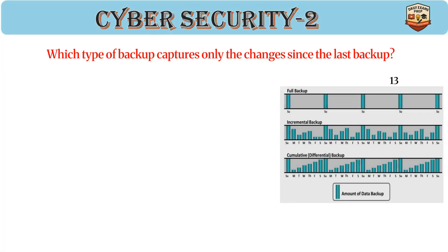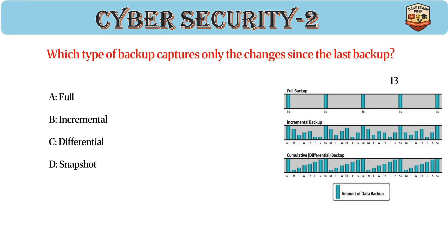Which type of backup captures only the changes since the last backup? Answer: B. Incremental. Incremental backups save storage space. Only new or changed files are backed up. Requires the last full backup to restore.